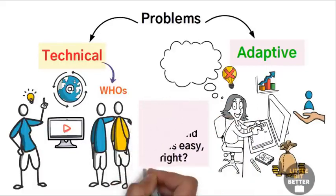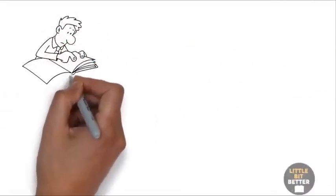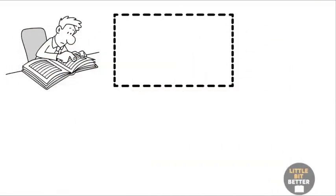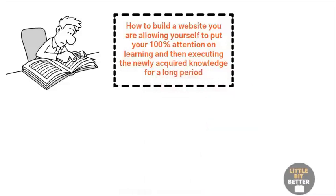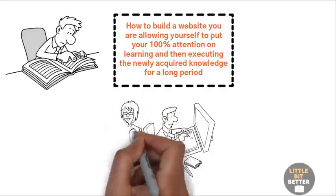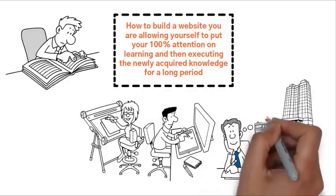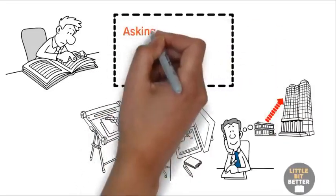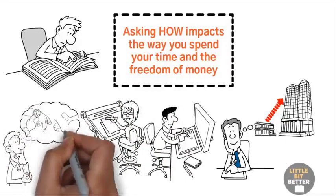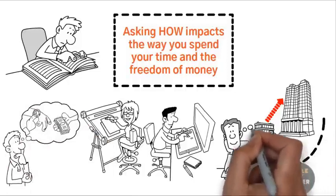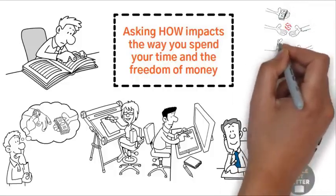But the problem is that very often the first question the entrepreneur asks is, how can I build a website? And here's how this question leads to problems. Our attention is 100% focused on the task we are doing, even if that's a distraction. By asking the question of how to build a website, you are allowing yourself to put your 100% attention on learning, and then executing the newly acquired knowledge for a long period. And even if in the future you do decide to find someone to hand over this responsibility to, you will have to first train that person to do the job as per your liking. In all of this, your main goal of growing and potentially achieving your big dream took a second priority. There is only so much that a person can do on his own. Asking how impacts the way you spend your time and the freedom of money. Freedom of money happens when you focus your time and energy on activities that have higher impacts on your business. You are in the business because you want to make more money, not to build a website. So focus on doing things that help you make more money, and find who's for the rest.